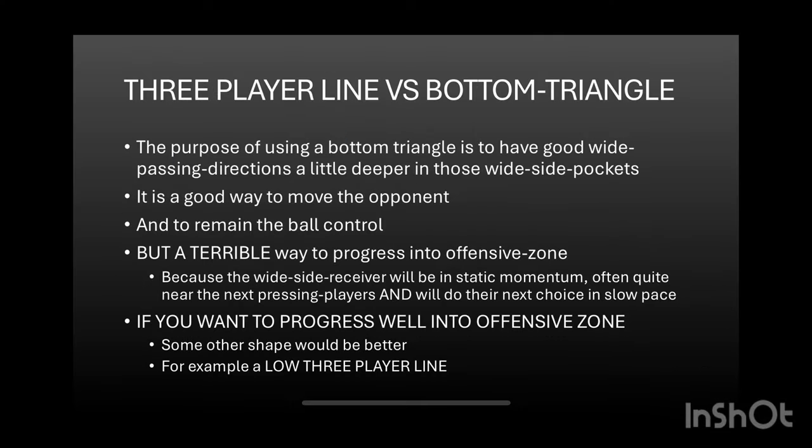Now, a three-player line versus a traditional bottom triangle. The purpose of this is to provide the idea that the bottom triangle is not the only way to open up the game. The purpose of using a bottom triangle — where you have one player at the bottom and two wide receivers in the wings a little higher up the pitch — is that it is a good way to open if you want those wide passing directions a bit deeper in those wide side pockets. It is a good way to move the opponent and maintain ball control.